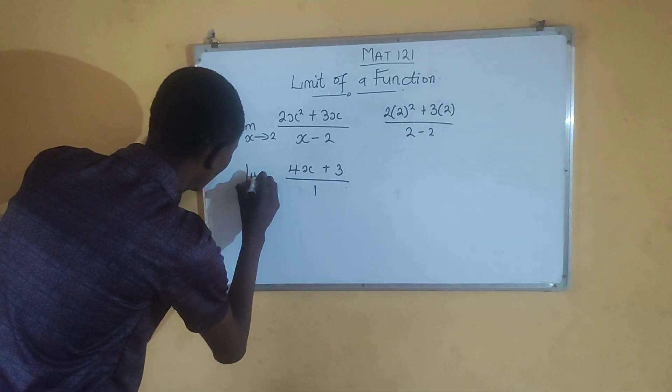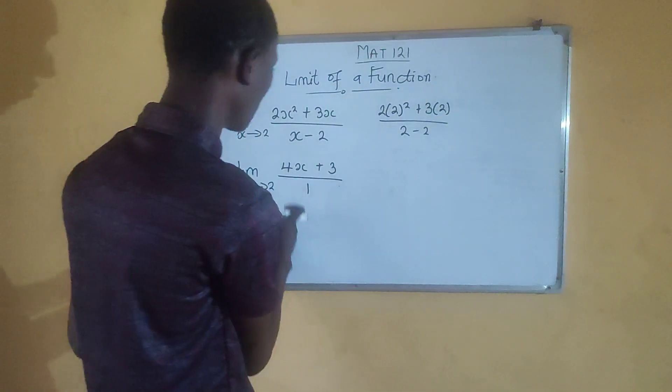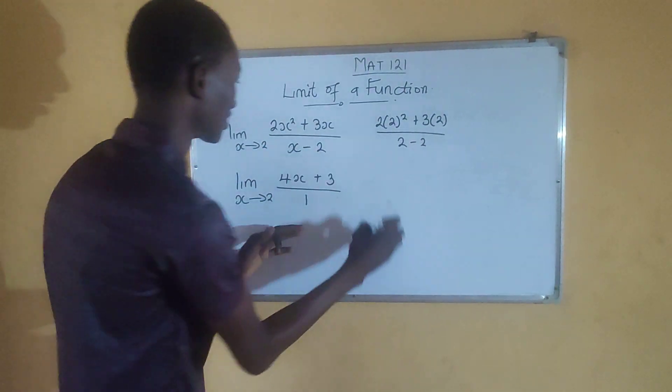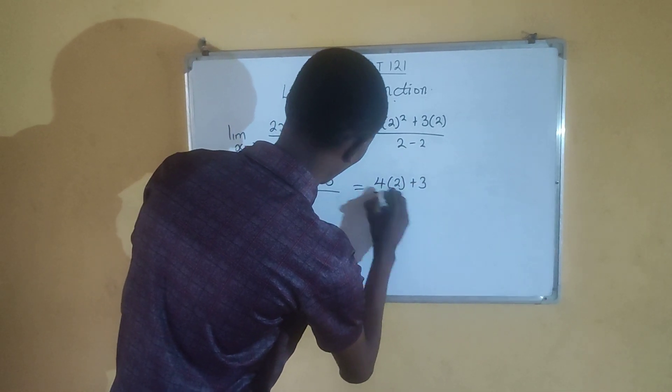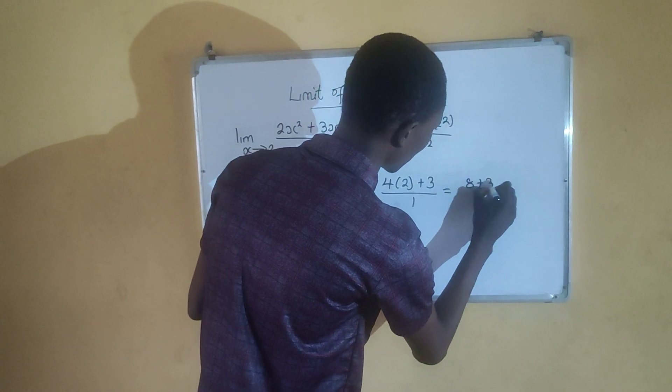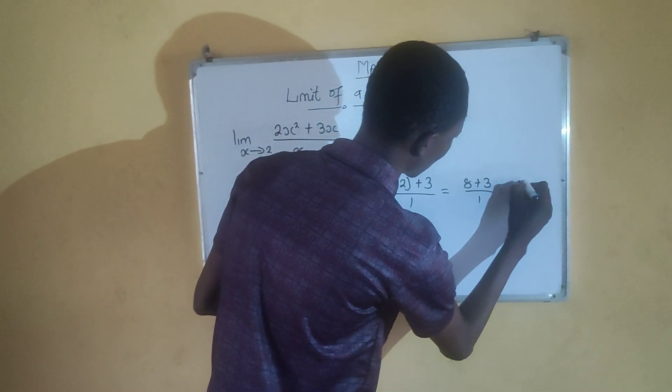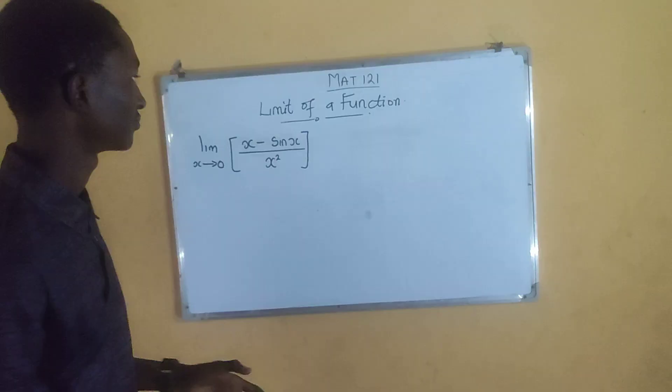So then you write your limit, limit x turns to 2. You input the value of x into this equation. So when you do that, 4 into bracket of 2 plus 3 all over 1. That's 4 times 2, 8 plus 3 all over 1. And the answer is 11 all over 1.